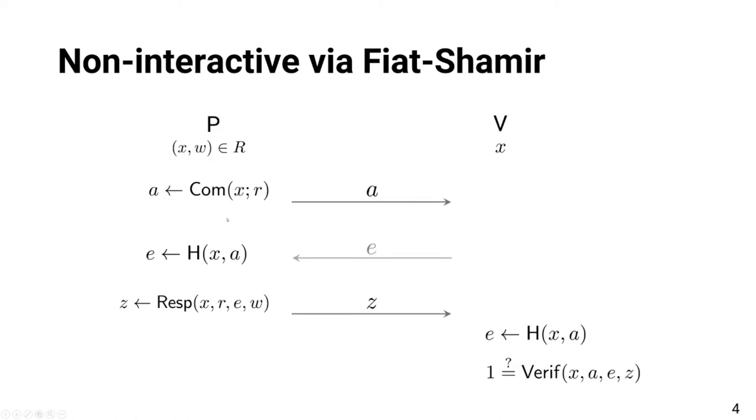Since a sigma protocol is a public coin proof system, the Fiat Shamir technique works to make it non-interactive in the random oracle model. The challenge is generated by hashing the first message. Here, the statement X is also given to the hash function as input for security reasons, but we omit that for visual simplicity in the rest of this talk.